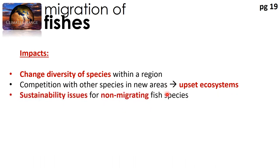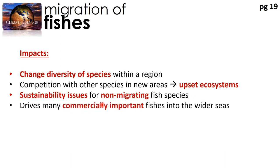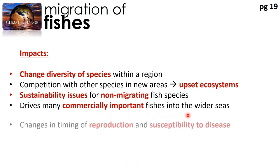For non-migrating fish species, they will have problems maintaining their population size. This will mean sustainability issues for us when it comes to acquiring food for ourselves. Increasing sea temperatures are also driving many commercially important fishes into the wider seas, which again causes food insecurity issues.